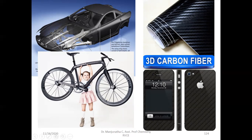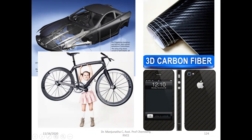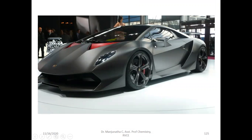This image shows a bicycle held by a small kid, representing how light the carbon fiber cycle is. It is a very high-strength sports cycle made up of carbon fiber. The car body and alloy wheels shown are also made up of carbon fiber. These are all the applications of carbon fiber.